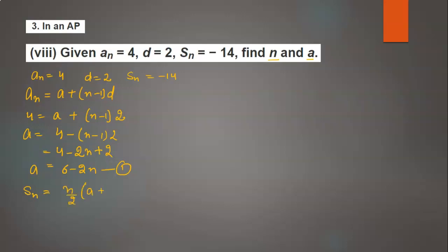Now the formula of Sn = n/2(a + an). Sn is given as -14, so -14 = n/2, and a value is 6 - 2n plus an is 4.